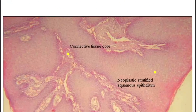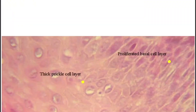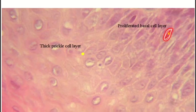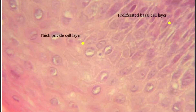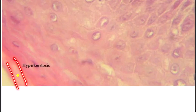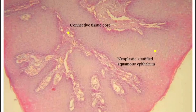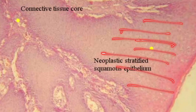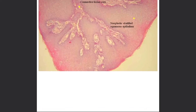Now let's see the histopathological features one by one. First, you can see the proliferated basal cell layer. Second, you can see the thick prickle cell layer. Third, here you can see the hyperkeratosis of the stratum corneum layer. And here you can see the neoplastic stratified squamous epithelium. These are the features of squamous cell papilloma.